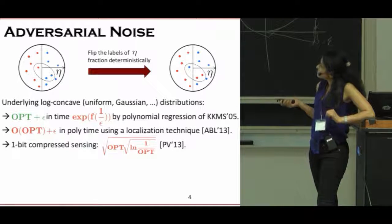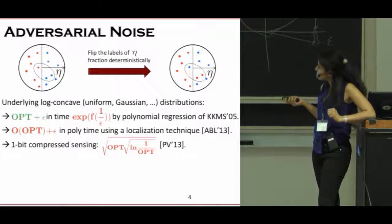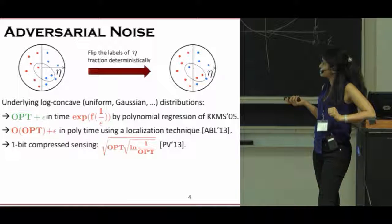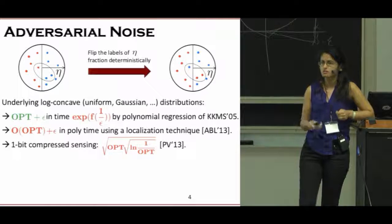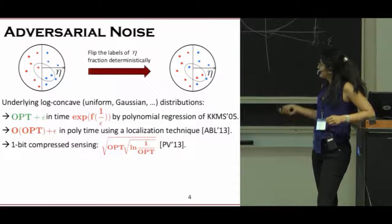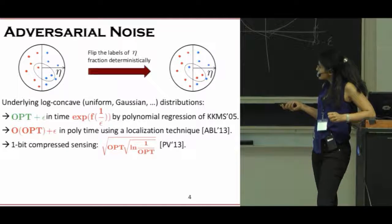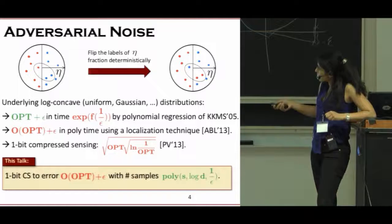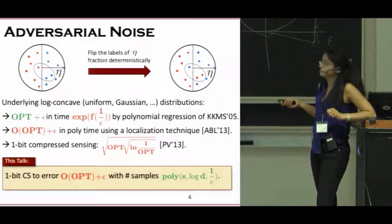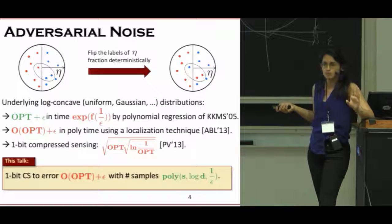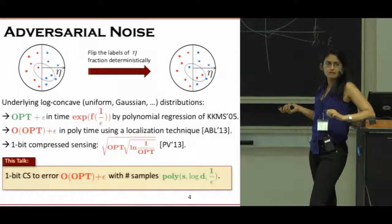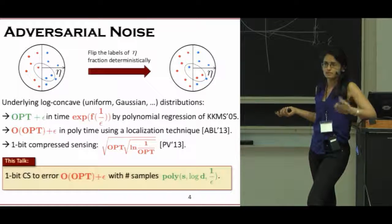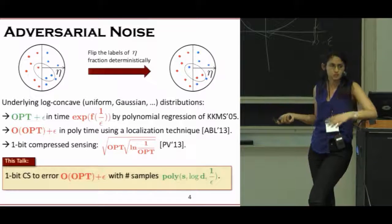This is also studied under one-bit compressed sensing, but the error or approximation factor is much worse than what we know in the non-sparse case. So what we are going to do is achieve what we used to achieve in the non-sparse case, but now with a number of samples that fits the one-bit compressed sensing setting, polynomial in sparsity only.